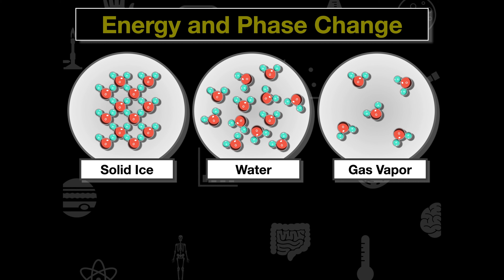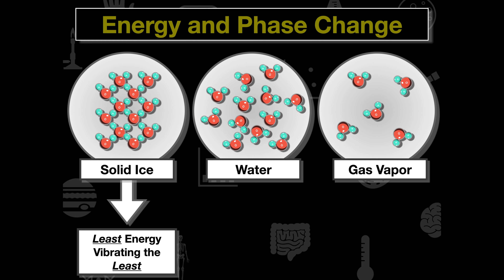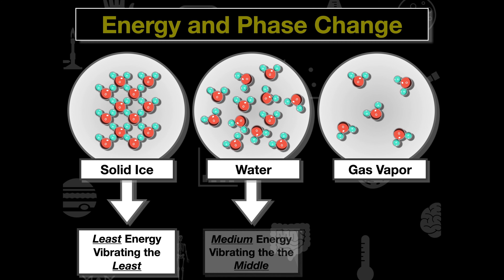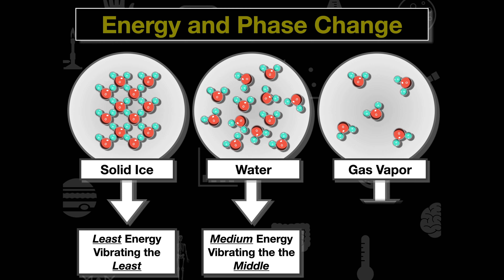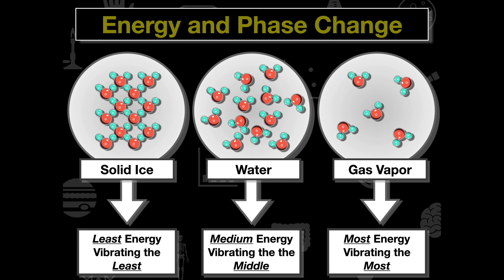Solid ice has the least amount of energy and vibrates the least, so molecules stay closer together creating that solid structure. As energy increases, liquid water has a medium amount of energy — molecules vibrate somewhere between a solid and gas, spreading out a bit more. Gas or vapor has the most energy, molecules vibrate the most and are spread out the furthest. We need to understand this structure in order to understand phase changes within the water cycle.